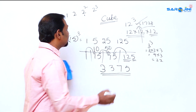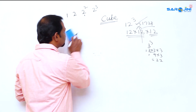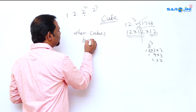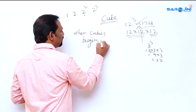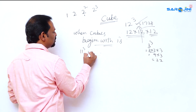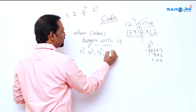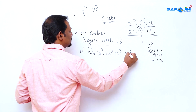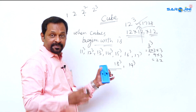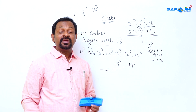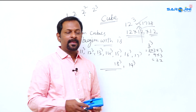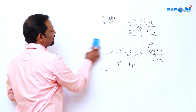This method is applicable only when the cubes begin with 1 — that means 11, 12, 13, 14, 15, 16, 17, 18, and 19 cubed. For other numbers there is a different method, which we will discuss later. Now let's look at a different format within the same cube topic.